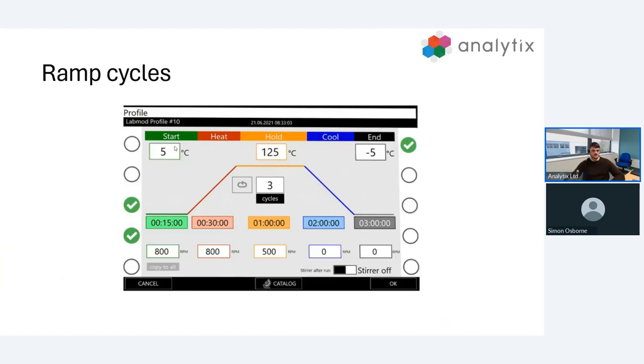Secondly, we have the ramp cycles. On your screen you can see a basic ramp and all these numbers can be modified. We can modify the stirring at each stage, the time of each stage, and the temperature at each stage, as well as the number of cycles. Although this is showing an increase in temperature, we could also modify the ramp so that our hold temperature is below our start temperature.